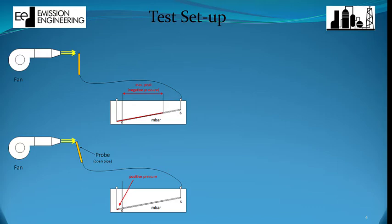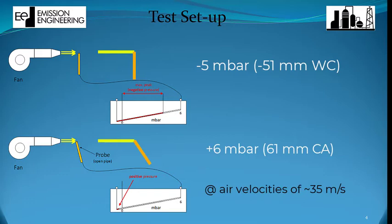As seen in the video, depending on the angle of the tubing, the delta P can be pretty much everything from minus 5 millibar or minus 51 millimeter water column to plus 6 millibar or 61 millimeter water column.